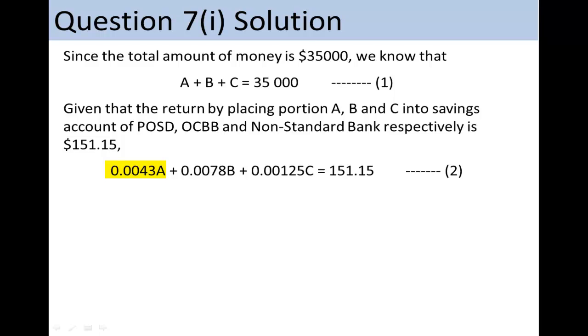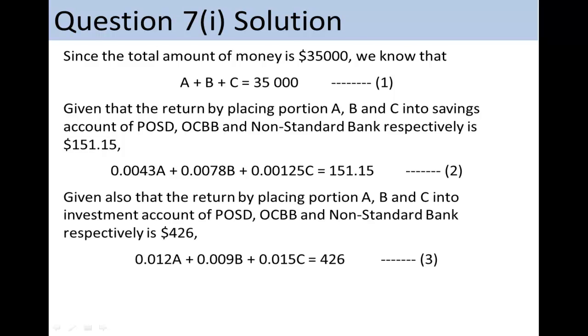The interest obtained by placing portion A in POSD account is 0.0043A. The interest obtained by placing portion B in OCBB bank is 0.0078B. And the interest obtained by placing portion C in non-standard bank is 0.00125C. We see that the sum of these three gives $151.15.